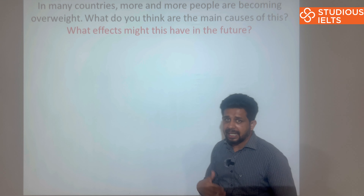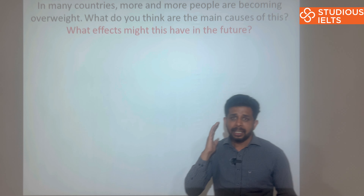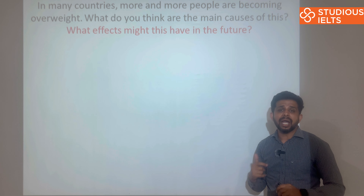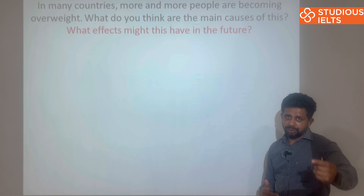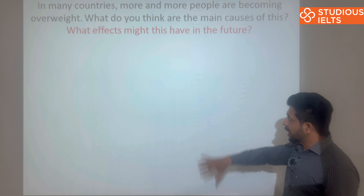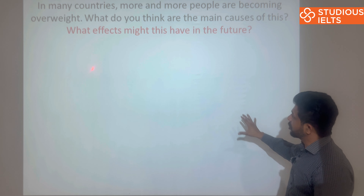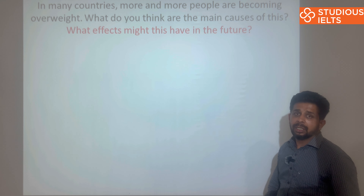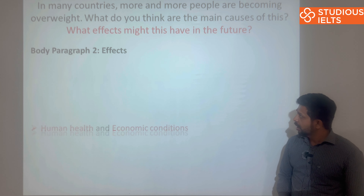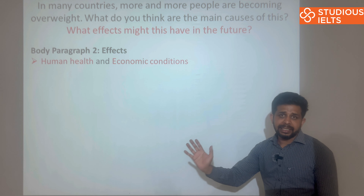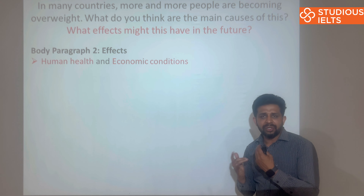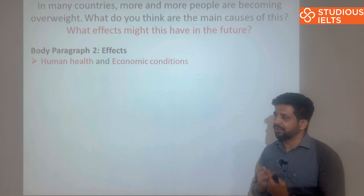This is our body paragraph 1, which elaborates the causes of obesity. Now I want you to draft your own body paragraph 1, where you have to tell the causes you have in mind. Now we are moving to body paragraph 2, which is going to address the second part of our question — what effects might this have in the future. We have already talked about these effects in our introduction; now we are going to elaborate them, develop them, and support them with relevant examples.